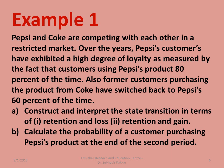Part A: Construct and interpret the state transition in terms of retention and loss, and retention and gain. Part B: Calculate the probability of a customer purchasing Pepsi's product at the end of the second period.